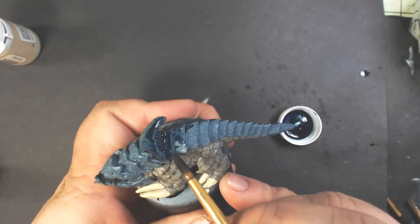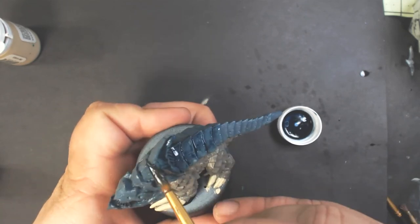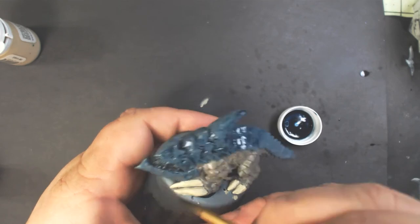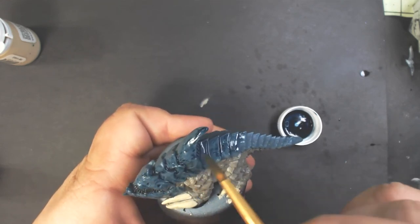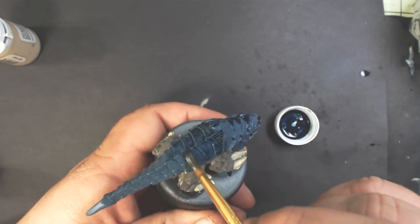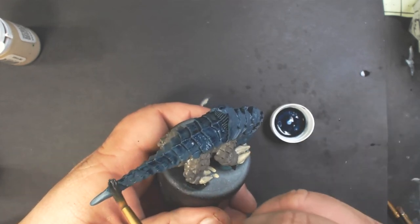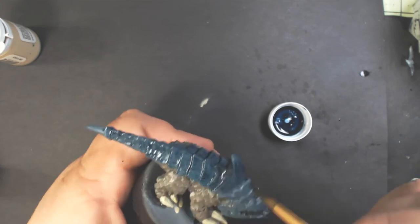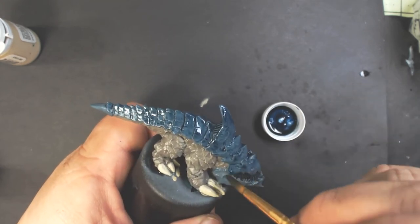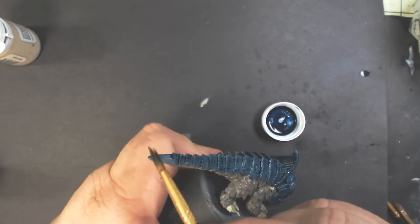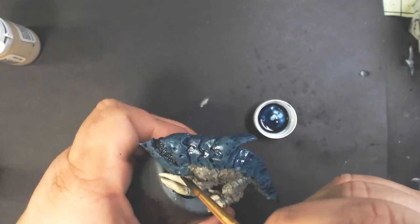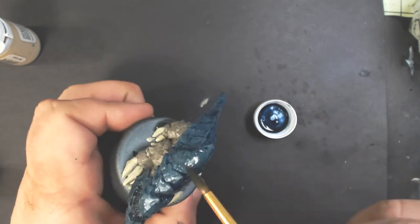Don't let it pool up too much. You just want it to stay in the recesses. So try to wick it away from all the flat areas, especially on the large plates above his head. There you can see I'm just cleaning up some of it, wiping it off on a paper towel.